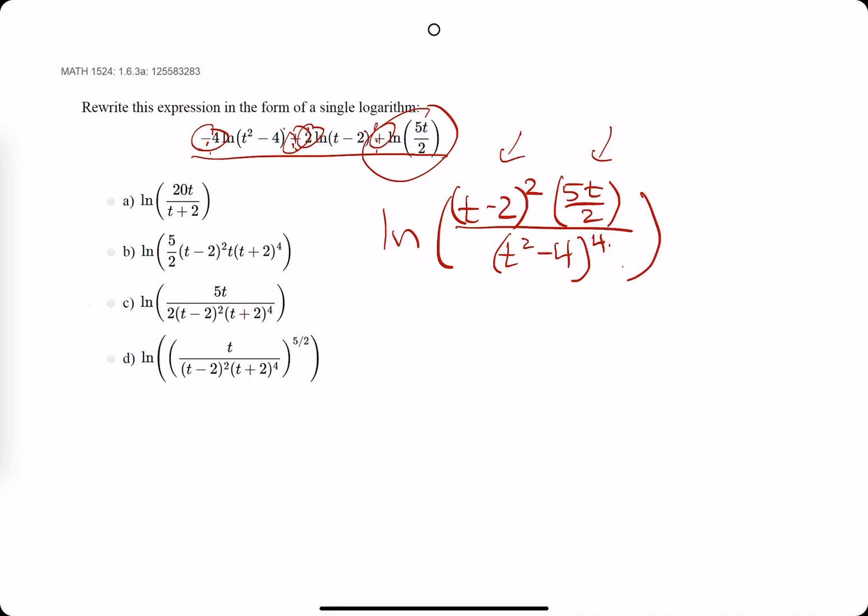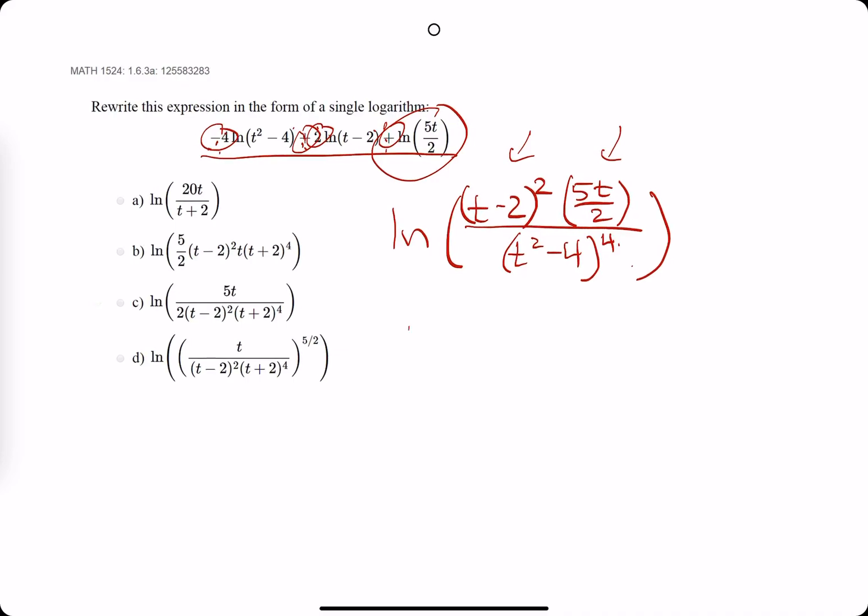Now, we're going to factor the denominator. The nice thing about these problems is that it'll always be a difference of two squares, where you'll have, in this case, t plus 2, t minus 2 on the bottom.